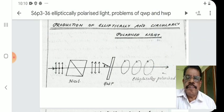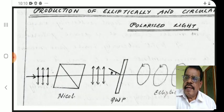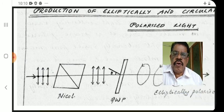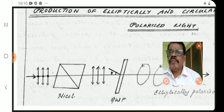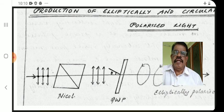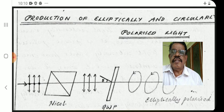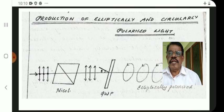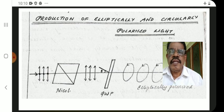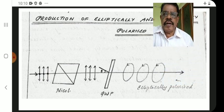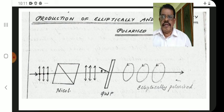This is how elliptically and circularly polarized light is produced. The first part of the question concerns the production of elliptically and circularly polarized light from plane polarized light.